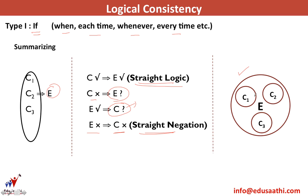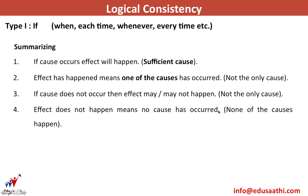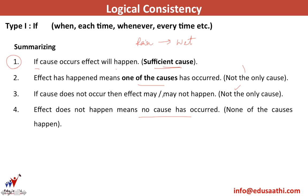Summarizing in terms of paragraphs: first, if the cause occurs, the effect will happen — this is a sufficient cause; one cause is sufficient for the effect to take place, like raining is sufficient to make the ground wet. Second, if the effect has happened, one of the causes has occurred, but not necessarily the only one mentioned in the question. Third, if the cause does not occur, the effect may or may not happen. Fourth, if the effect does not happen, no cause has occurred — including the cause mentioned in the question — this is straight negation.